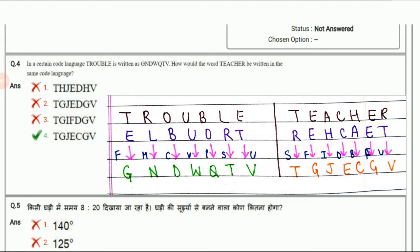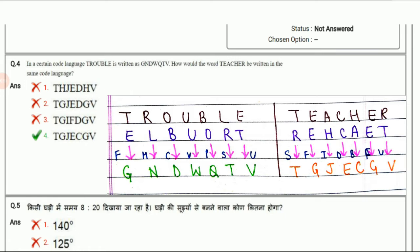We will do the same thing with the asked word TEACHER. Let's write TEACHER and then in reverse order: R E H C A E T. Now R leaving S we get T, then E leave F we get G, then H leave I we get J. Repeat the same thing with all letters. We get the correct code as TGJECGV, that is option 4. I hope it has been clear to you all.